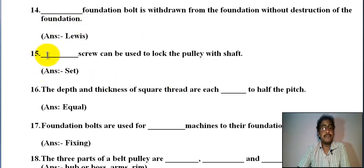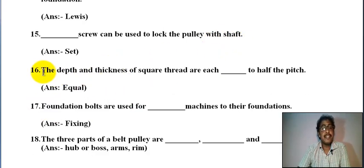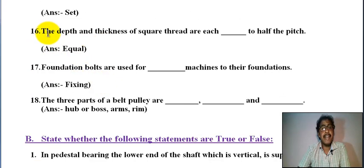Number fifteen: set screw can be used to lock the pulley and shaft. Number sixteen: the depth and thickness of square thread are each equal to half the pitch.